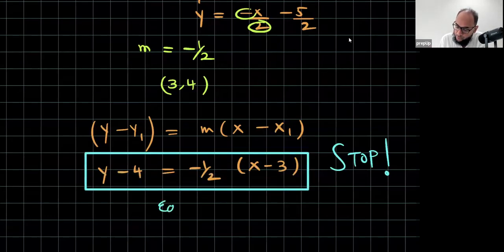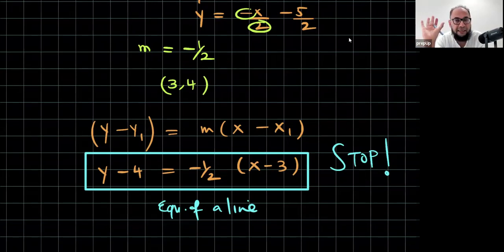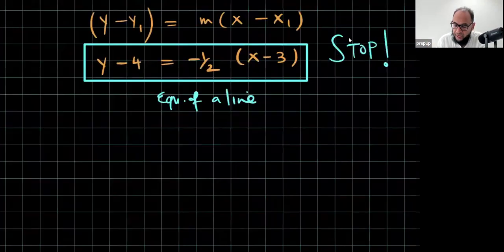So, that is the equation of a line. Always take the benefit of doubt. Since the examiner has not asked for any particular format, just leave it in this particular format and that's all good, all perfect, all clear. So, now, let me do another question. Before that, another concept.